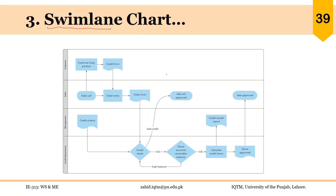There are rows that resemble the lanes in a swimming competition or in a swimming pool. These swim lanes actually represent the different departments or different parties in a business, and we draw the process steps in the relevant lane.